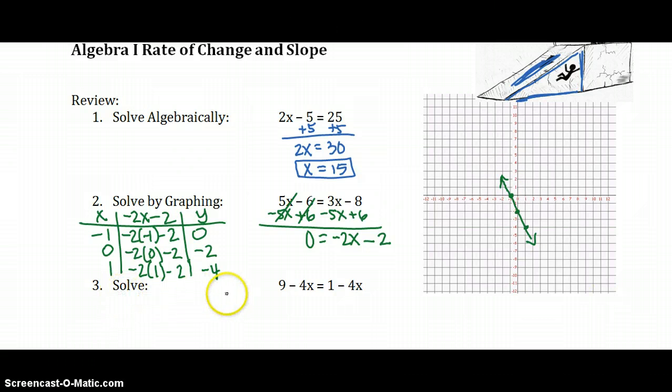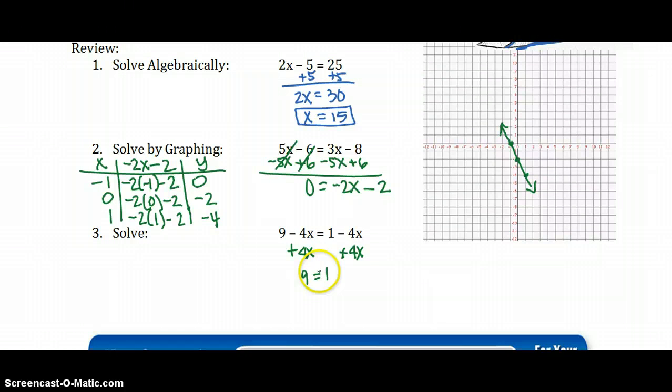Okay, and then this one just says to solve. So if we try to solve, we add 4x to both sides. And we end up with 9 equals 1. And we know that's not true, so this one has no solutions.